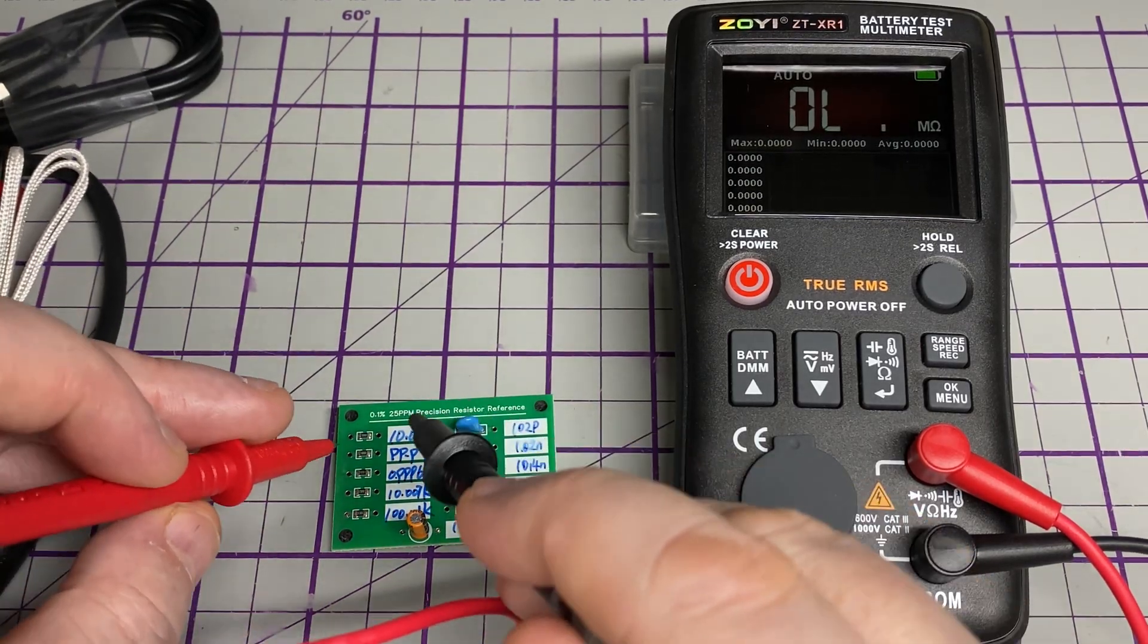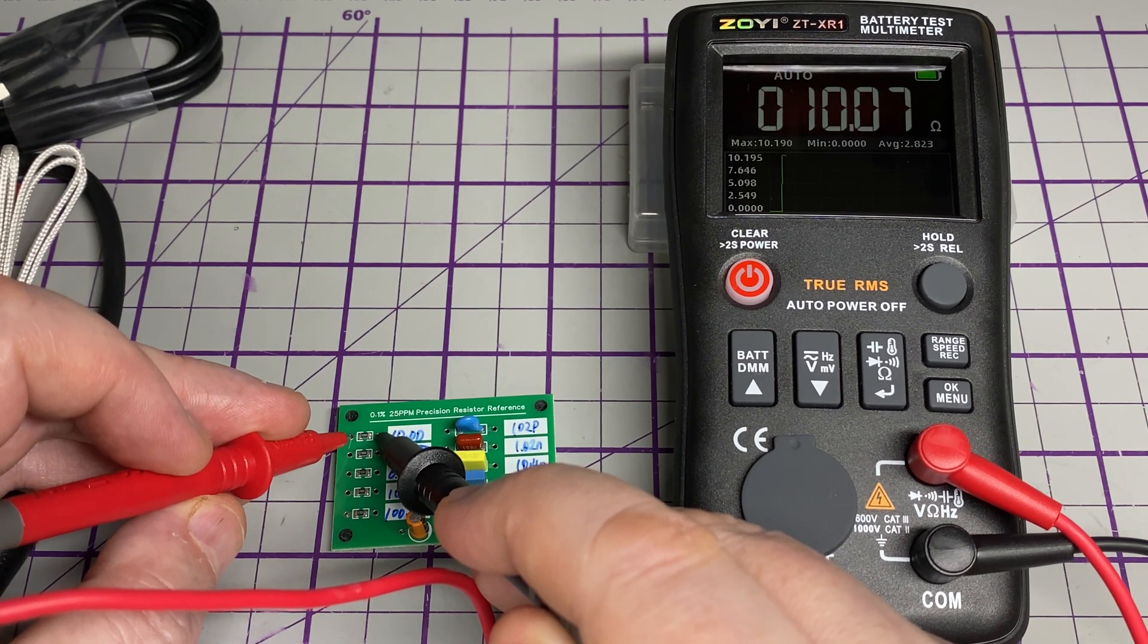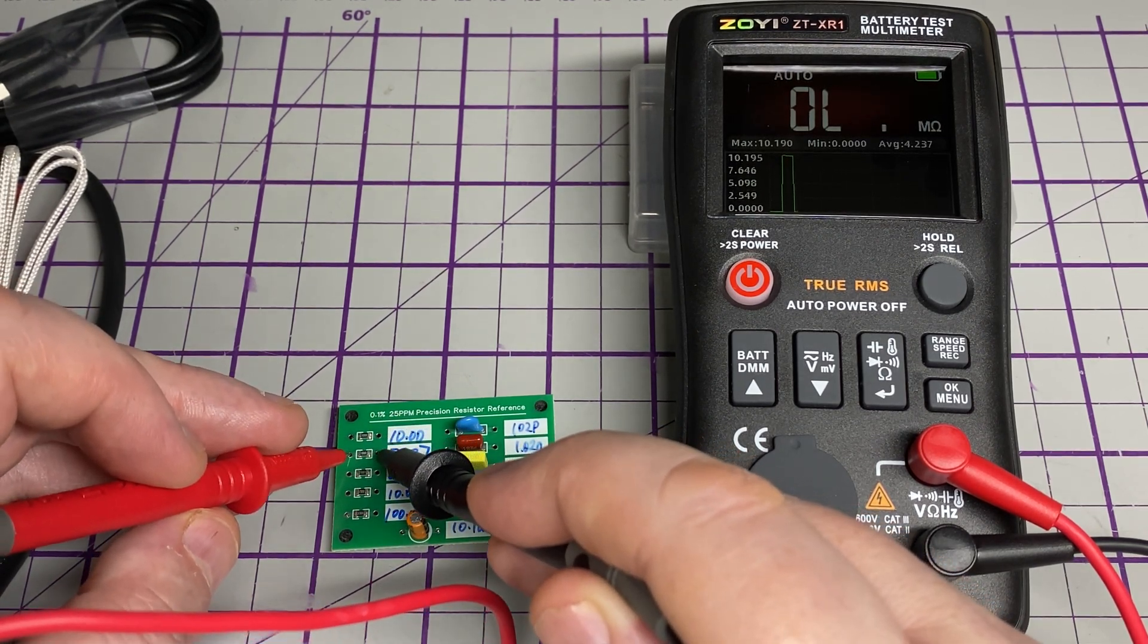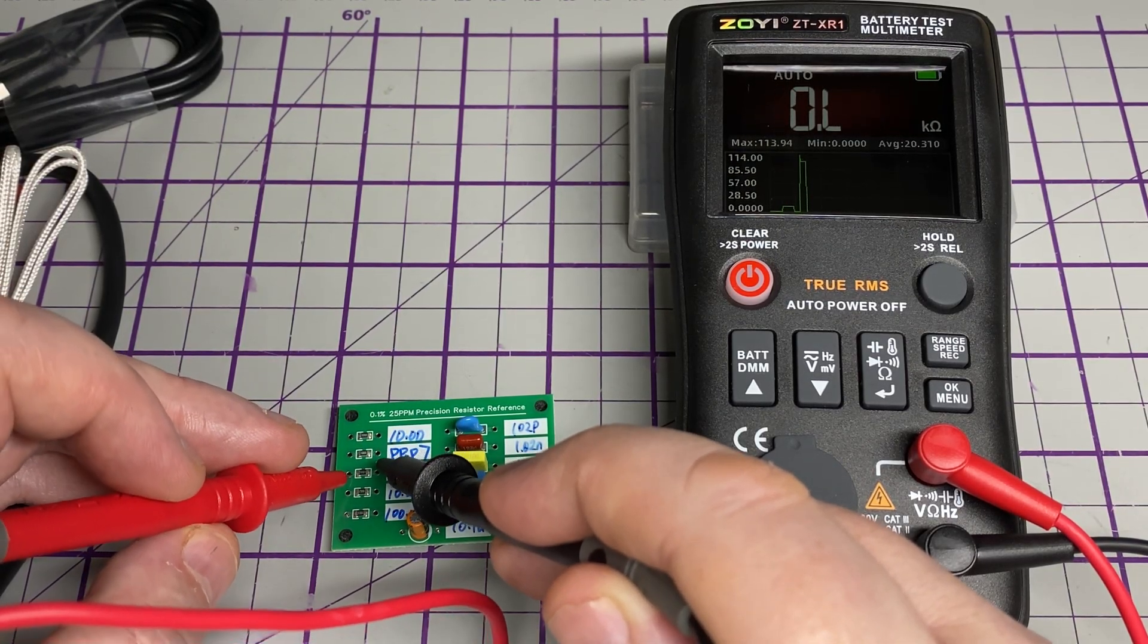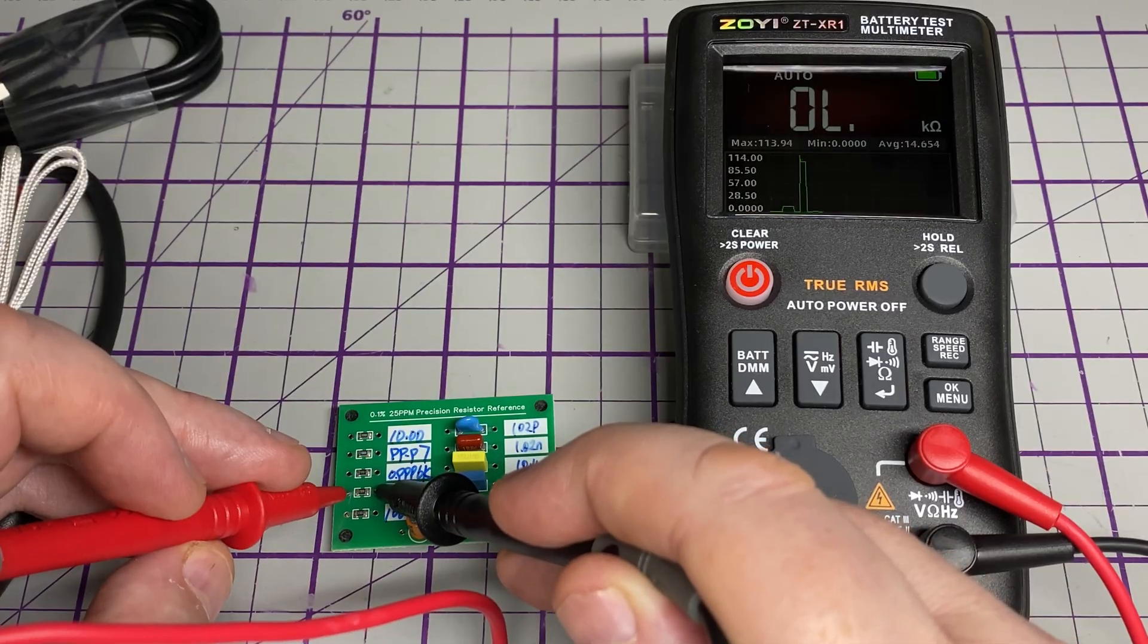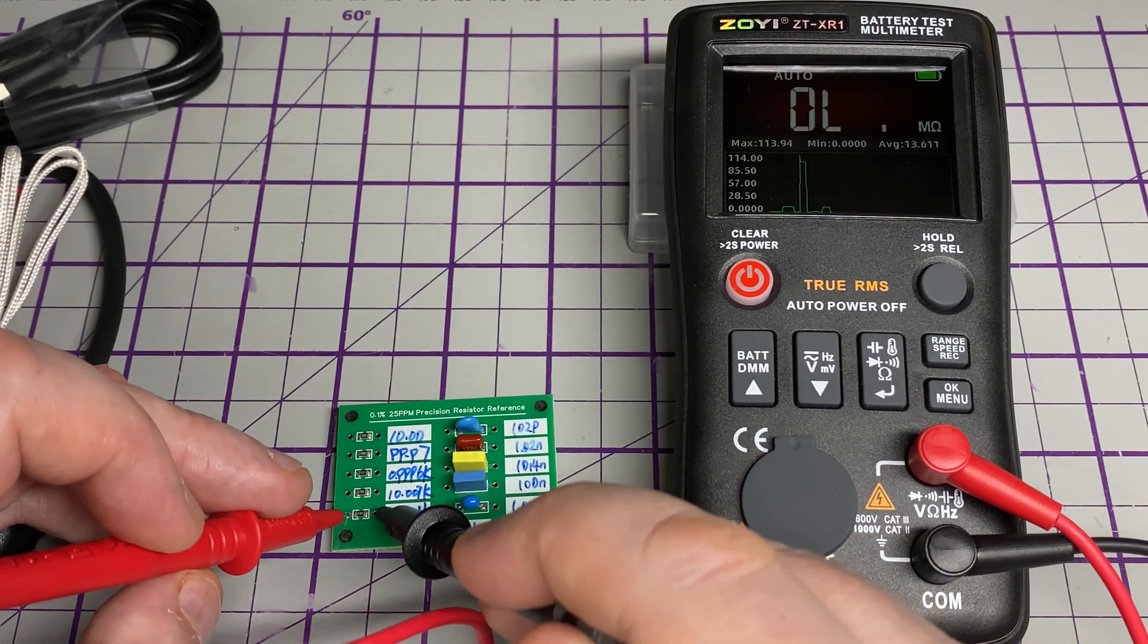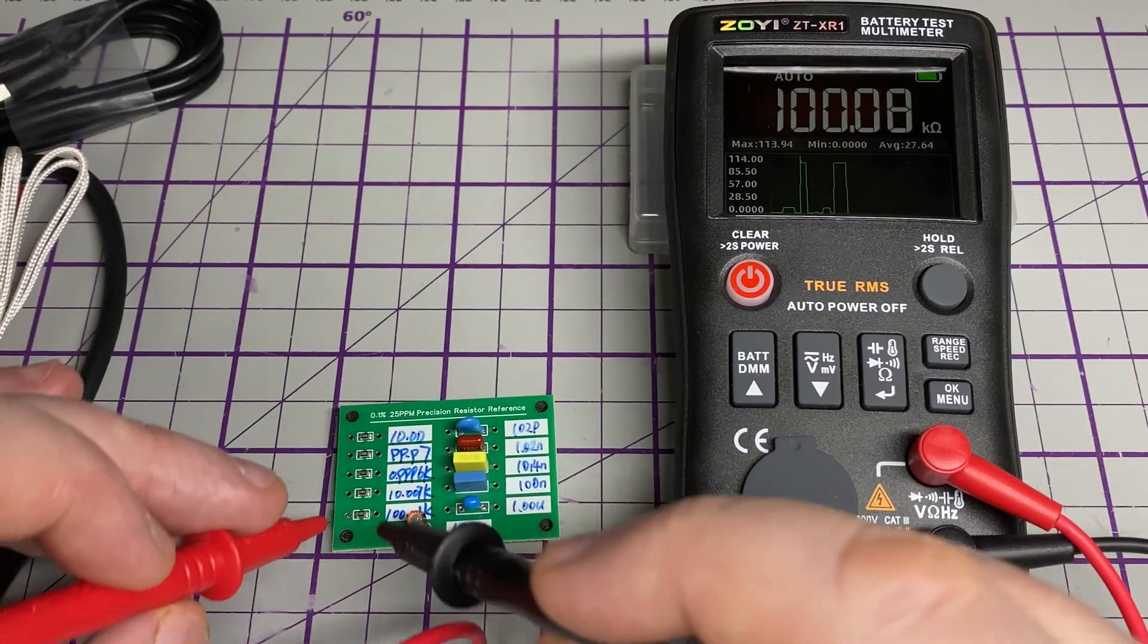The first resistor: 10 ohm, good enough. Let's move down to the second resistor, this should be 100 ohms. Yep, 100 ohms, no problem. This should be 1k, yep 1k no problem. We've got a 10k and we've got a 100k. Not too bad at all.